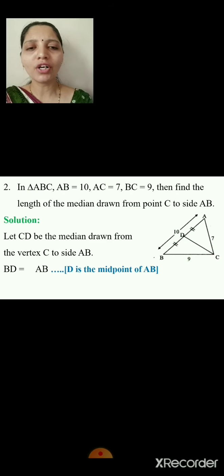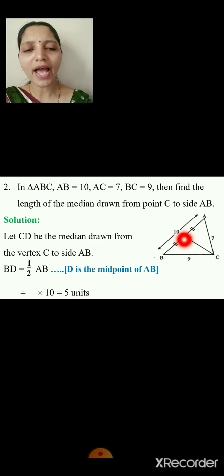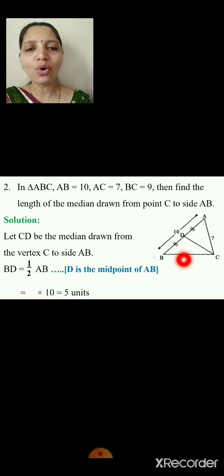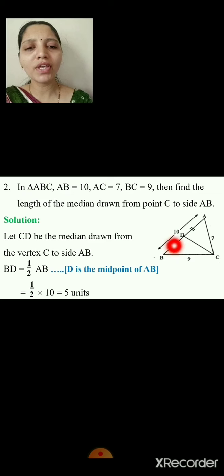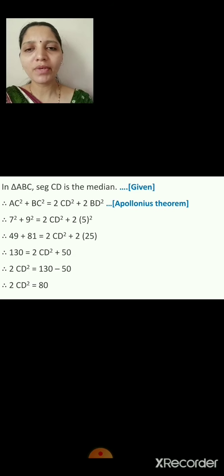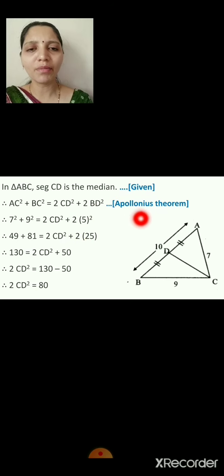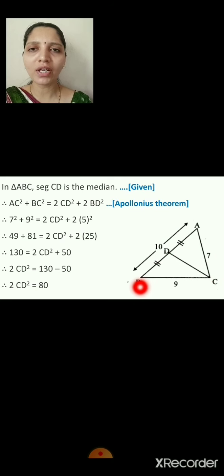Since CD is the median, D is the midpoint of AB, so BD = ½·AB = ½ × 10 = 5 units. In triangle ABC, segment CD is the median, so we can apply the Apollonius theorem. Angle ADC is acute and angle CDB is obtuse.